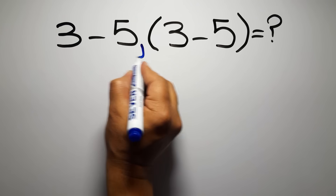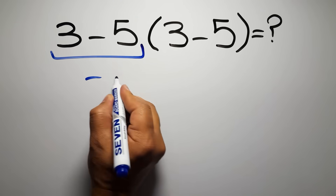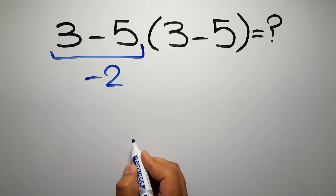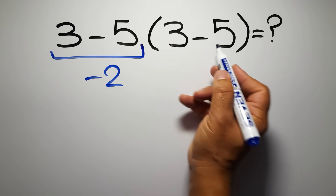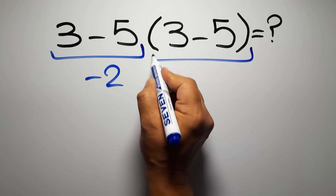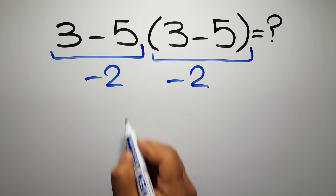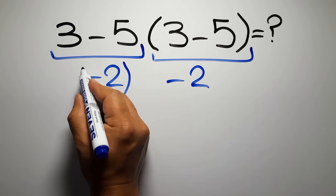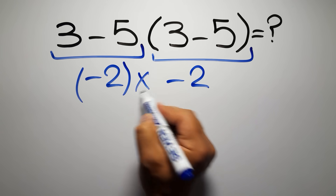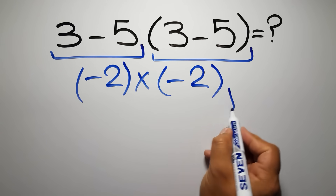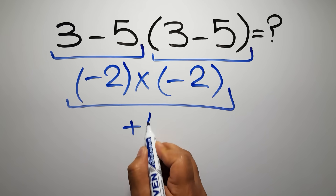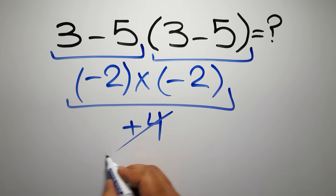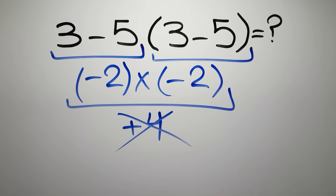3 minus 5 gives us negative 2, and again here inside these parentheses we have 3 minus 5. So negative 2 times negative 2 which gives us positive 4. But this answer is not correct.